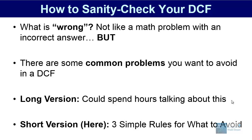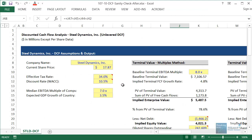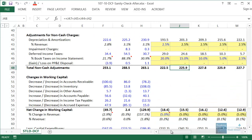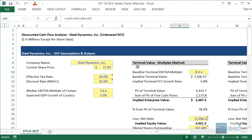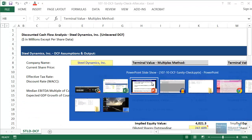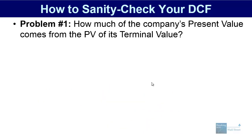What I want to do is give you three simple rules for what to avoid in a DCF. These rules correspond to the top three mistakes I've seen over time from candidates submitting models in case studies, on the job, and all sorts of different contexts. I'm going to give you those three rules first, then we'll go into Excel and learn how to diagnose what might be going wrong in a simple DCF analysis.